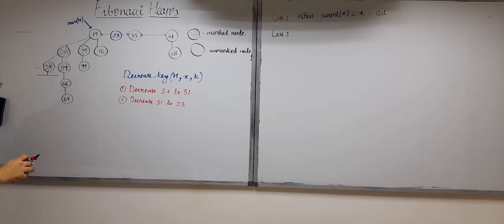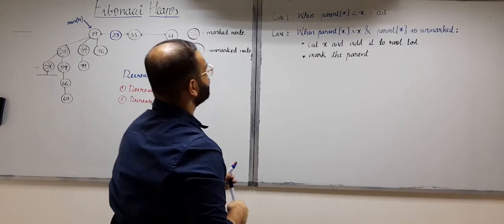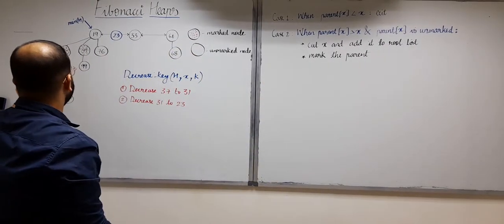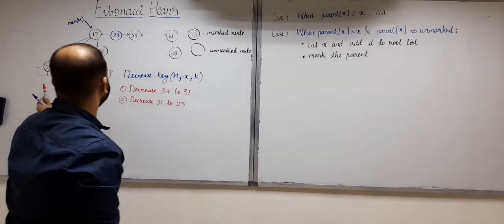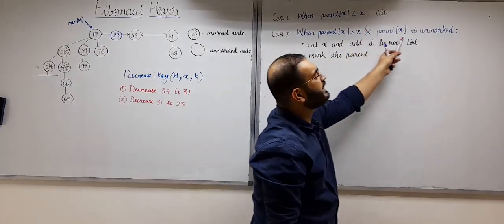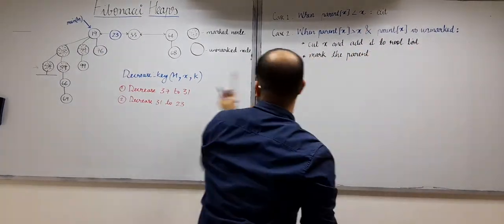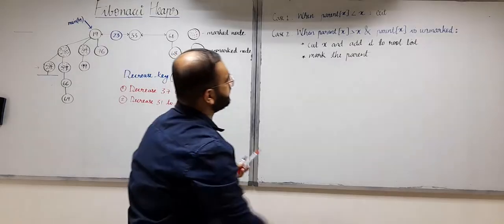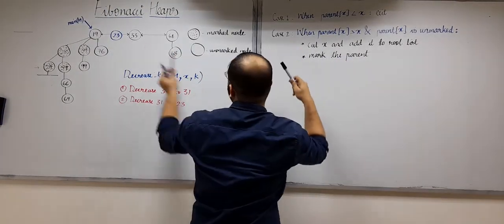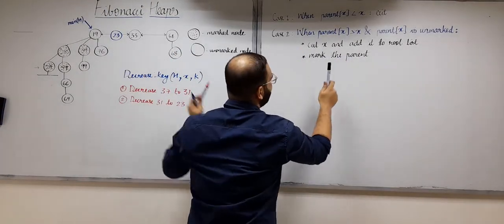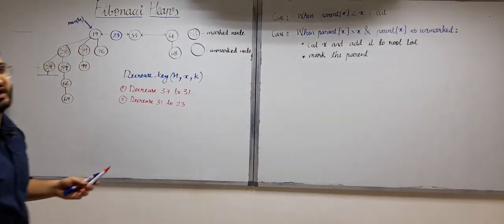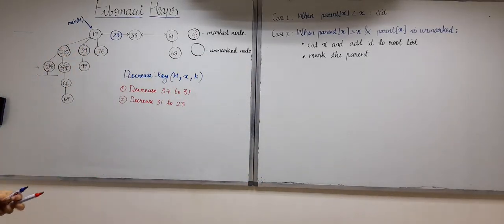So to write down case 2: when the parent of x is greater than x and the parent is unmarked, we cut x and add it to the root list, and we mark the parent. That was case 2. Now what can be the other case?